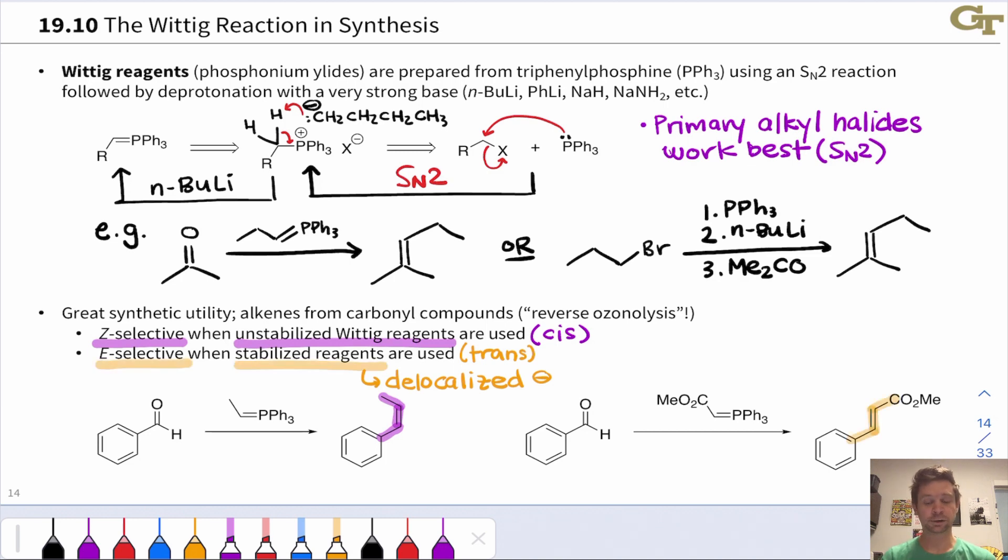And here stabilized really means delocalized negative charge into an electron withdrawing group such as an ester. So we see in this right-hand case when we use a phosphonium ylid with an ester group connected to the anionic carbon, we end up with the E or trans isomer selectively.